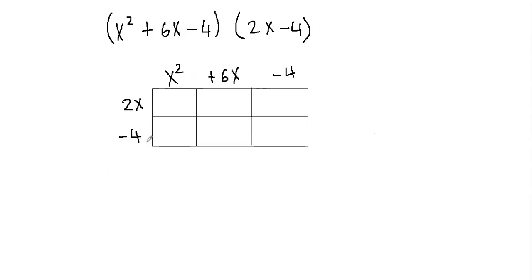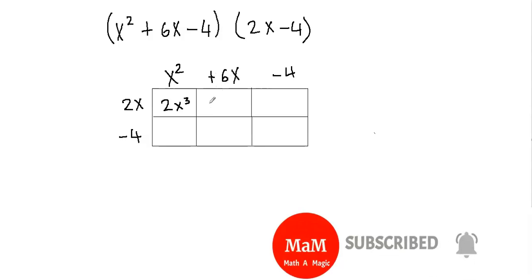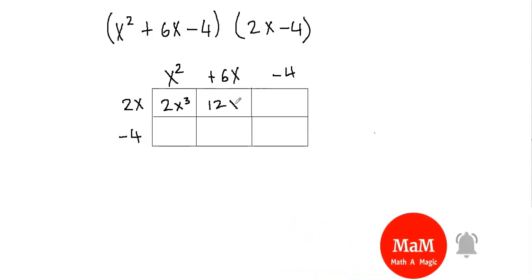Now we're done arranging our terms. Now what I need to do is multiply my rows by columns. I'll take my first row and multiply that by all the columns. So I'll multiply 2x with x squared first, then 2x with positive 6x, and then 2x with negative 4. So 2x times x squared will give us 2x cubed, then 2x times positive 6x will give us 12x squared.